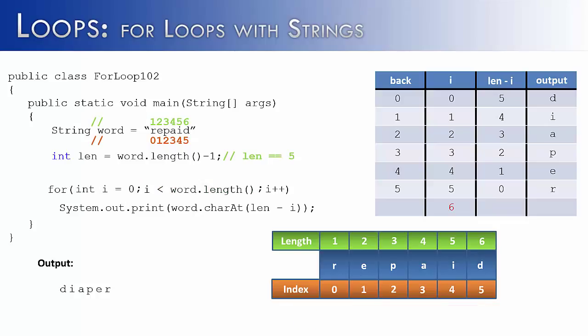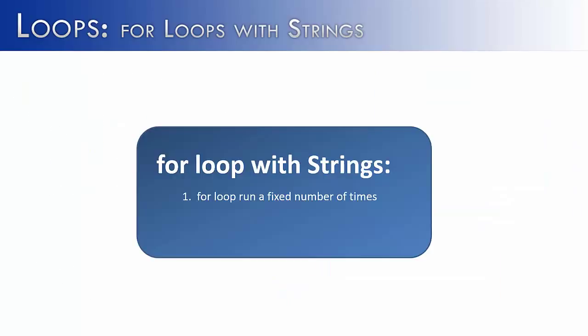Using substring for the forward-loop-backward-traverse: word.substring(len - i, len - i + 1) gives the same result — 'diaper'. For loops and strings have a special relationship because for loops run a fixed number of times and strings have a fixed length, making them a natural match. For loops can traverse strings forwards, backwards, or even backwards inside a forward-running loop — and this also prepares the beginner programmer for arrays.